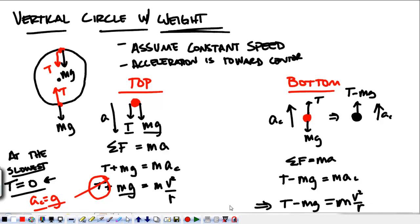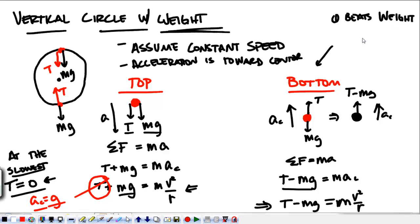Moving at the same speed, the tension at the bottom must be greater than at the top. At the bottom, tension is doing two things: overcoming the weight and providing centripetal force. At the top, it's the combination of tension plus weight that provides centripetal force. At the bottom, it's only the tension doing both jobs, so tension must be greater at the bottom and smaller at the top. At the slowest speed at the top, tension equals zero.